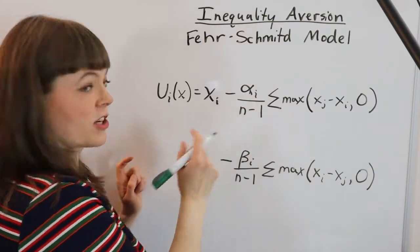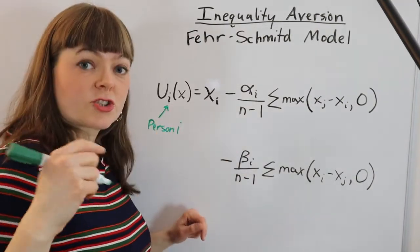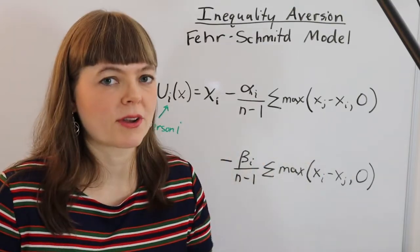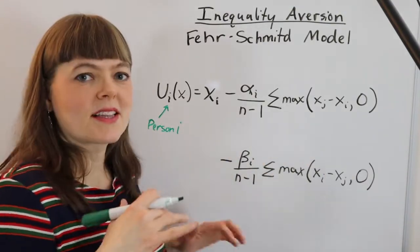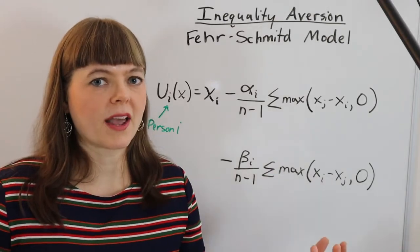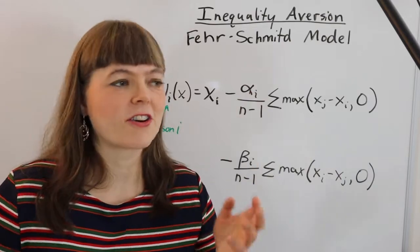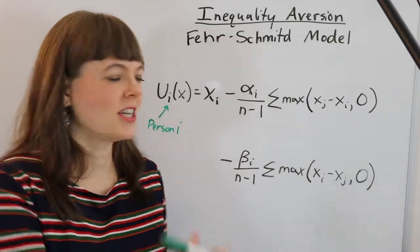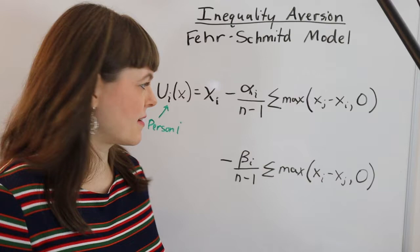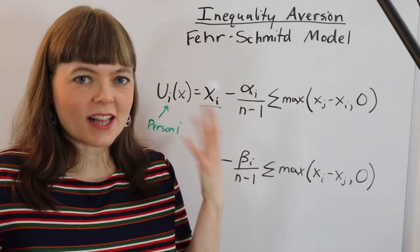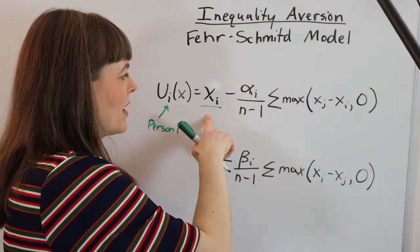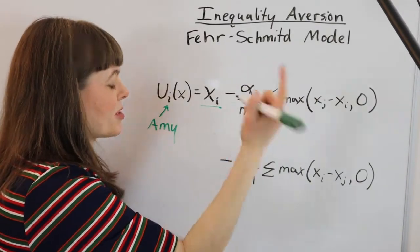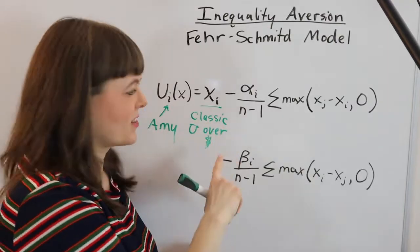This utility function is a utility function for person i, meaning we're describing how person i feels about a certain outcome where they get a certain amount of money and other people get a different amount of money. X is basically the vector of the outcome — so you might imagine if there are three people and Amy gets a hundred dollars, Bob gets fifty dollars, and Carol gets twenty dollars, that could be the vector. It's just how much each person in that group gets. The first term in many of these models is just classic consumption utility — it's just how much money does Amy get. That's our classic part of our model.